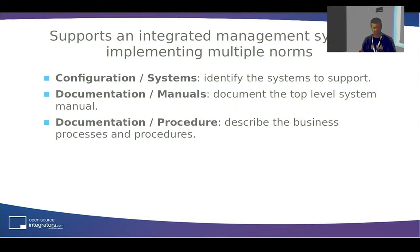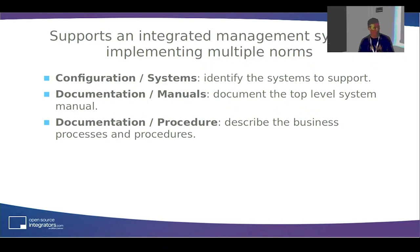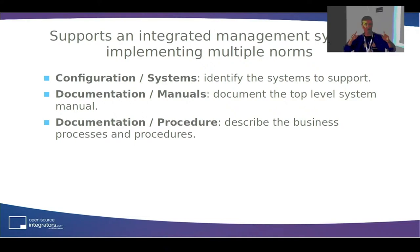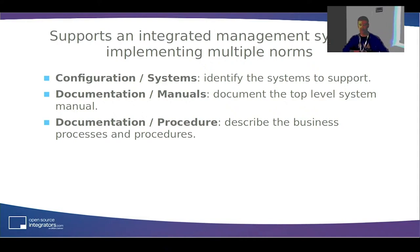In the configuration you can create and declare the systems you use — quality, environment, hazards. Then you have a documentation area: a menu where you can create the manual, which is the overarching document explaining how you comply with the requirements at a high level. Then you have the procedures, which add all the details for each process in your organization — how you meet the requirements specifically in that area. This is the backbone of documenting how you meet the requirements.